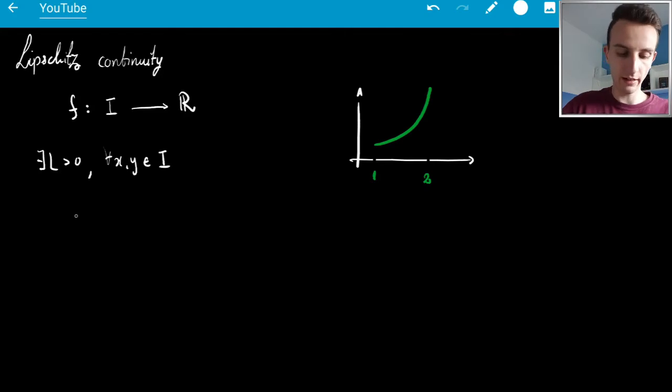for all x, y in I, |f(x) - f(y)|, I suppose it could be equal to 0, is less than or equal to L times |x - y|,